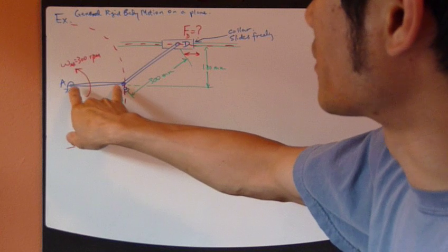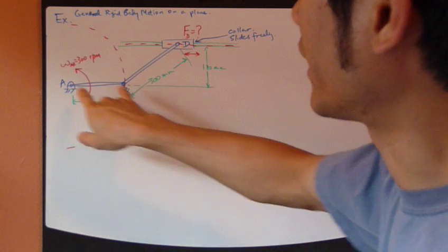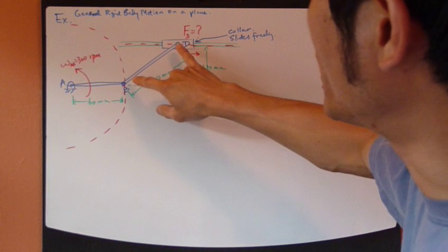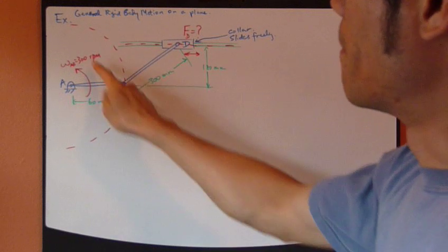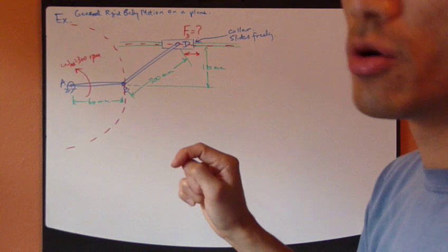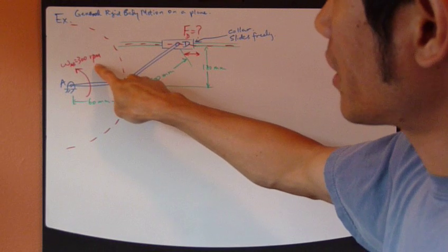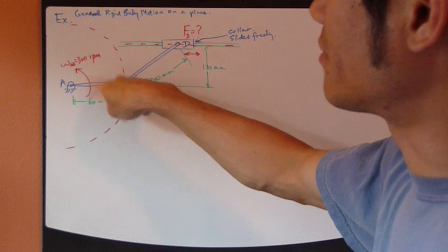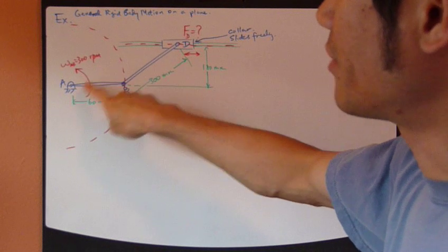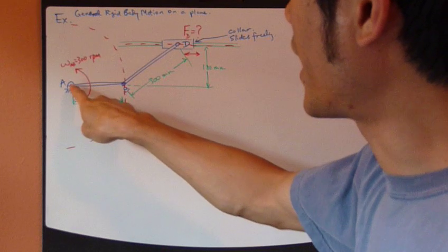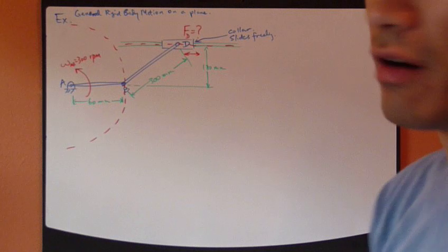Let's get started. We have this system that consists of two links: AB and BD. Now the motion of AB is known. It's spinning at constant velocity, so anything involving A or B is taken care of.